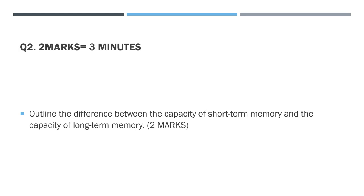The key here is wording - you need to directly compare them. Comparative language such as 'whereas', 'however', or 'on the other hand' is vital. Examiners can be very picky and you don't want to lose marks for one word. For two marks: the capacity of long-term memory is much larger than short-term memory because there is unlimited capacity in LTM, whereas in STM it's seven plus or minus two items. You don't need to name the study, but you can. You could mention chunking but it's only two marks.